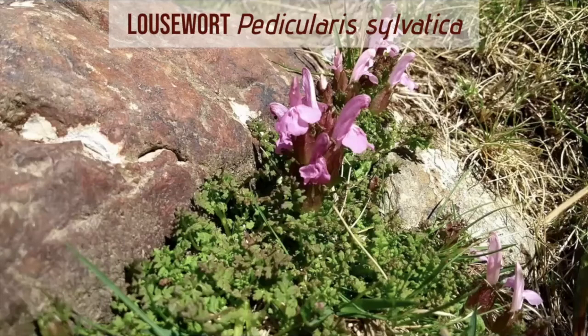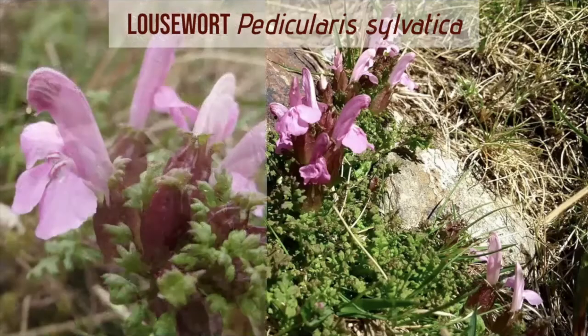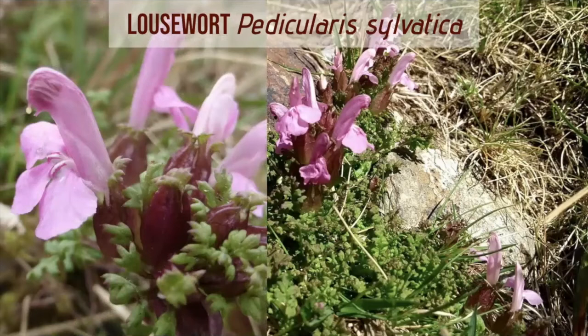Lousewort is another plant in the broomrape family, growing on damp acidic soils in moorlands and mountains as well as in lowland bogs and other damp places. It's a very miniature plant, only six or seven centimetres tall. The flowers are shaped a bit like yellow rattle but are mauve-lilac in colour, and they grow in clusters of six around miniature clasping, finger-like leaves that are finely divided.